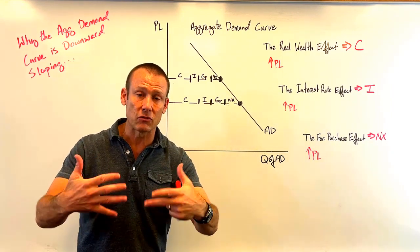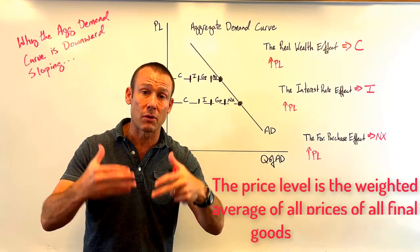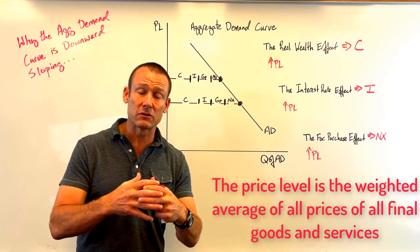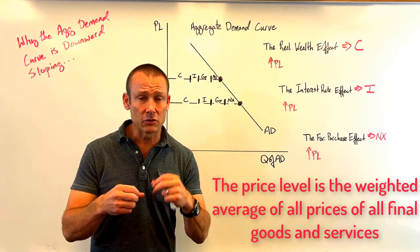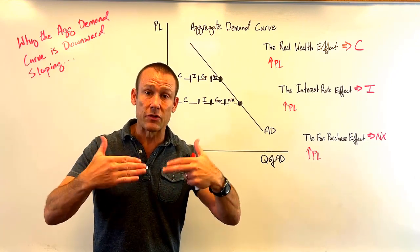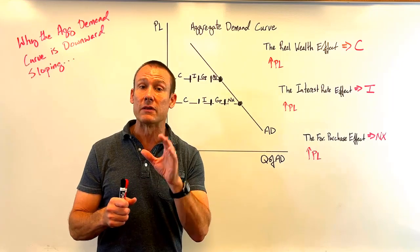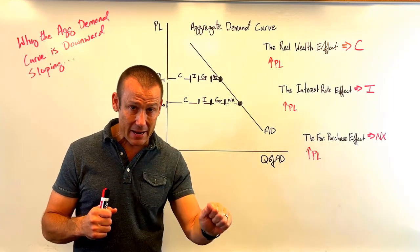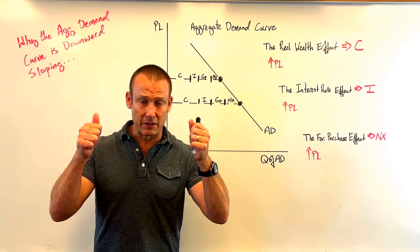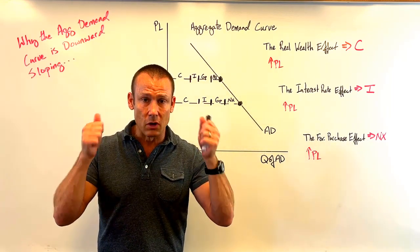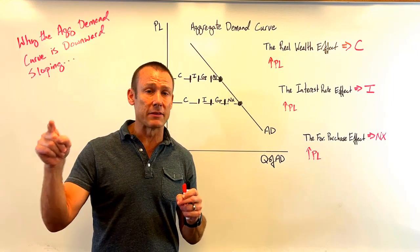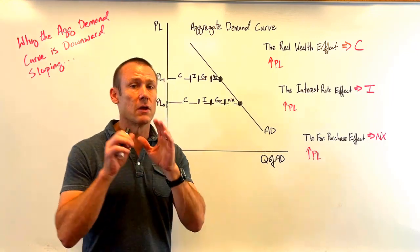That's not what's happening with aggregate demand, because here we have the price level — what's happening to prices generally in the economy. It's not just one good's price changing; it's almost all goods changing. It's an average, the general level of prices. So it is not the same reason why a demand curve for a single good is downward sloping. That's what economists tell us we need to cover — why the AD curve is downward sloping, because it's different.